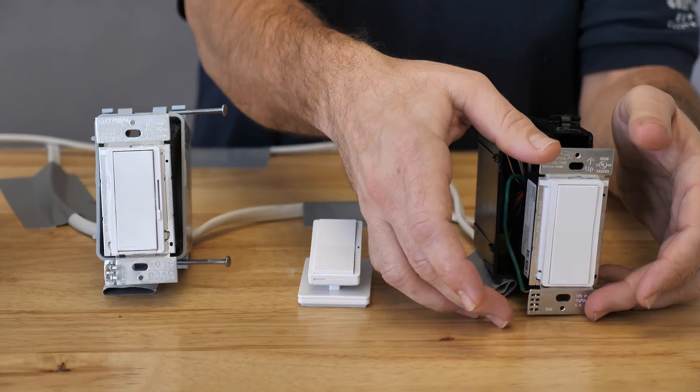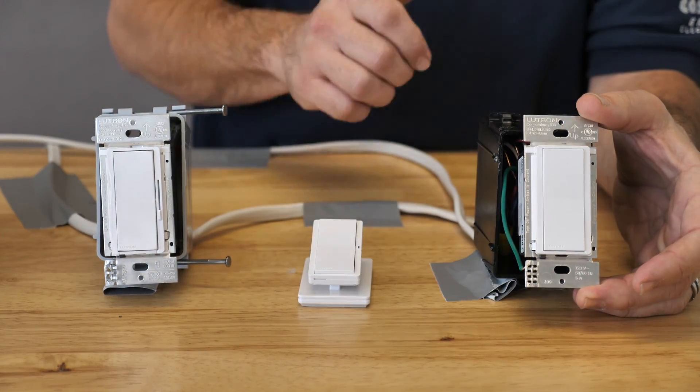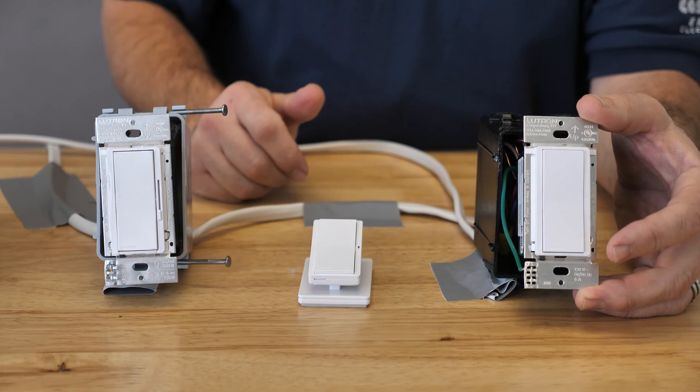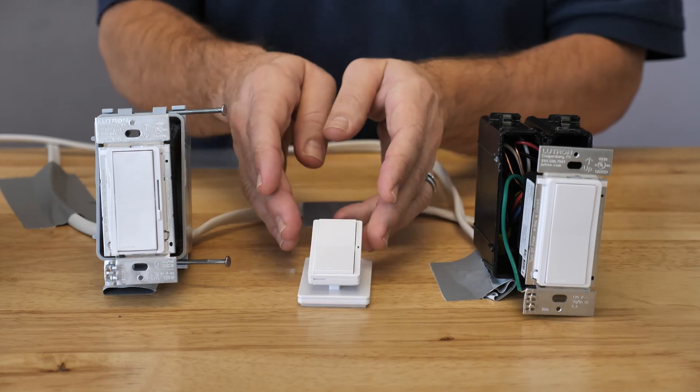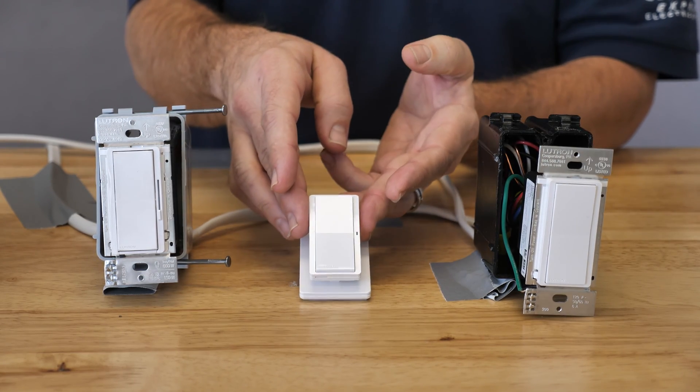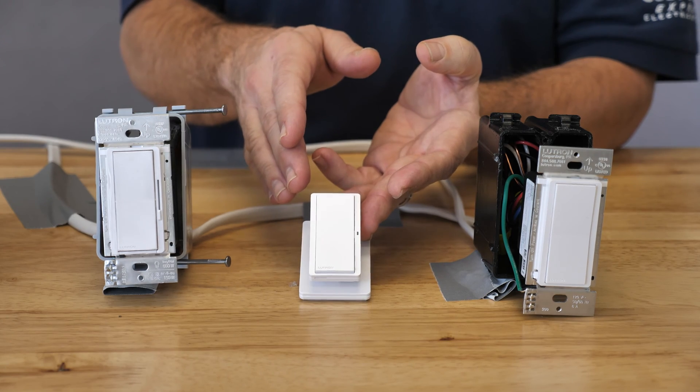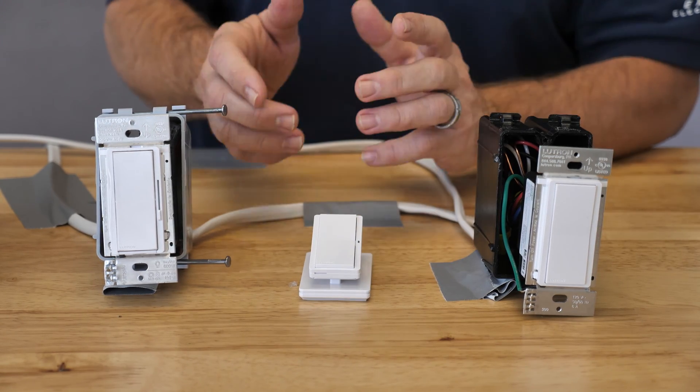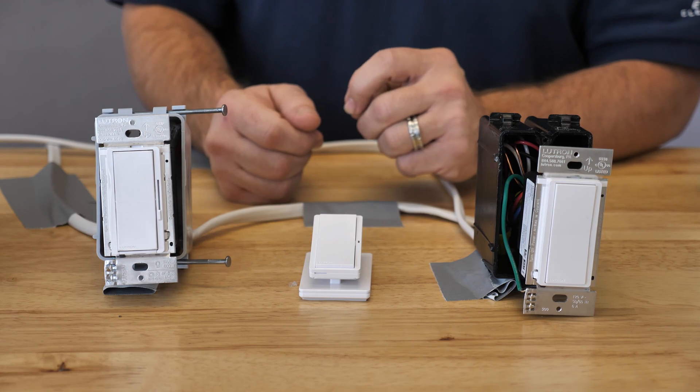Also with the Diva RF series we have a matching accessory switch that allows for switching from different locations and recall. Then we'll talk quickly about the new Paddle Pico, which is actually going to help you also expand your system just like you've expected with other Cassetta products.